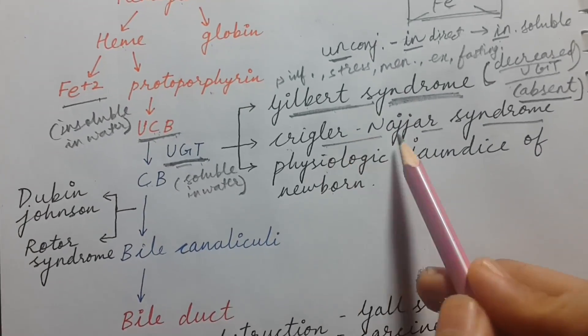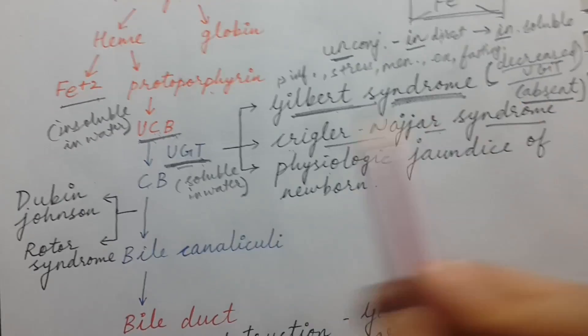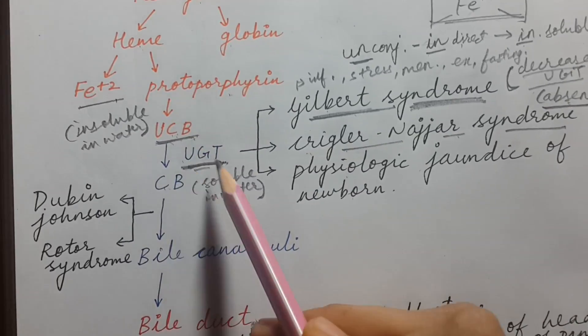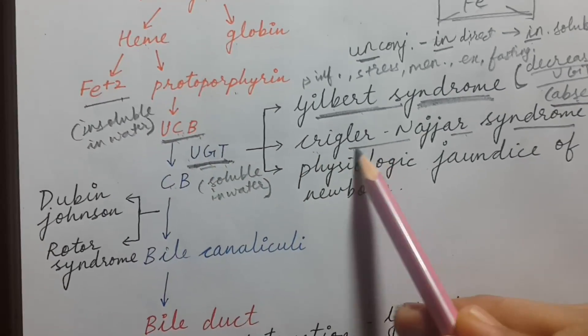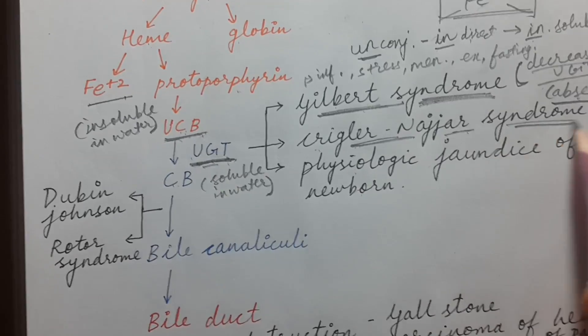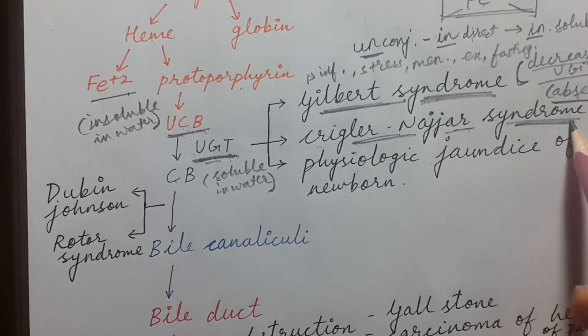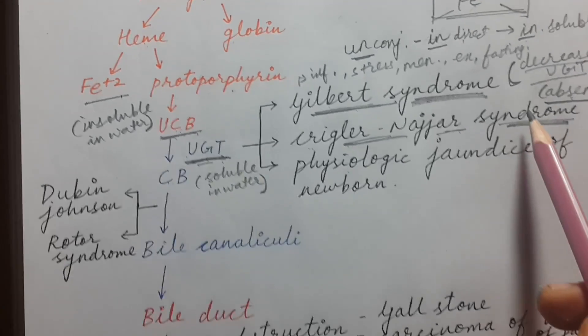Crigler-Najjar syndrome has complete absence of UGT. In this case the only treatment option is liver transplant — there is no other way to save the patient.